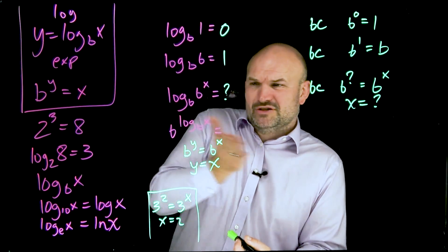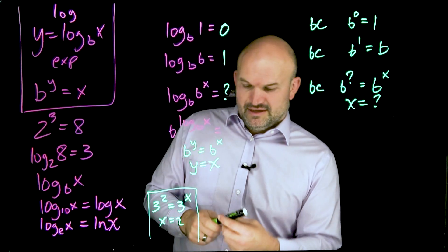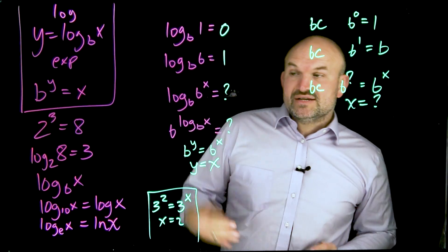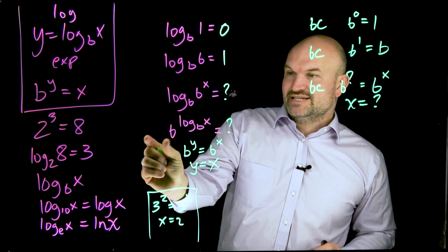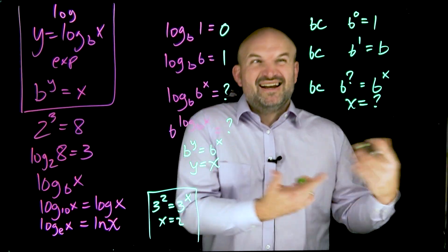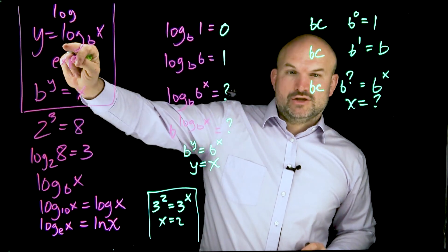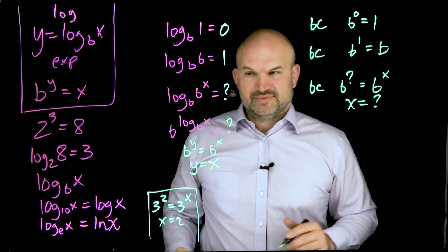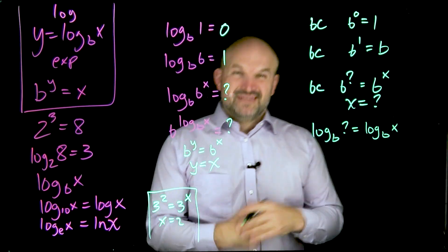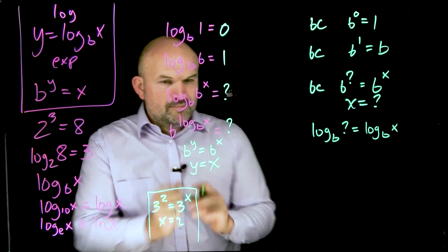Now, the next one, this gets to a lot of students as well because this one looks just as confusing. So it says b raised to the log base b of x is equal to what? Well, again, let's use the question mark. Okay? Now, notice this is an exponential form. You have a base raised to a power equals some variable. So I don't want to rewrite this in exponential form. It's already in exponential form. I need to go from exponential form back to logarithmic form. So now it's going to look something like this.